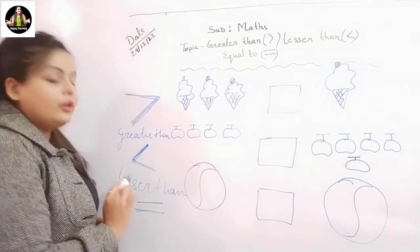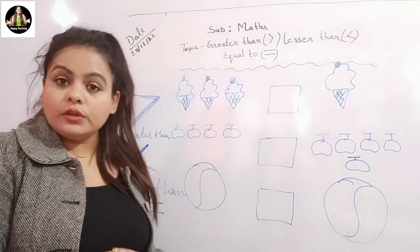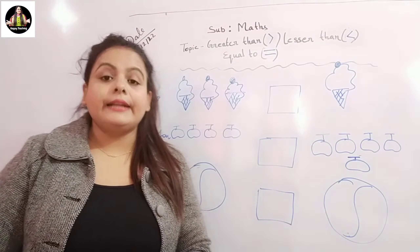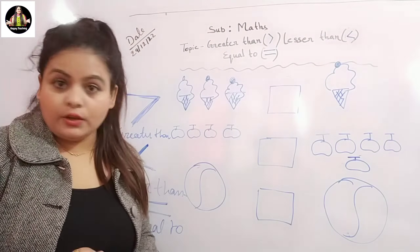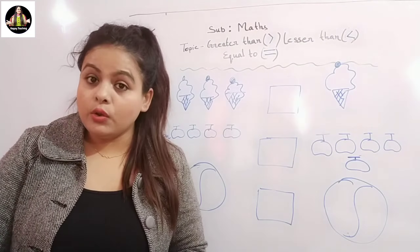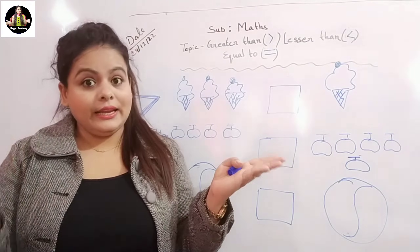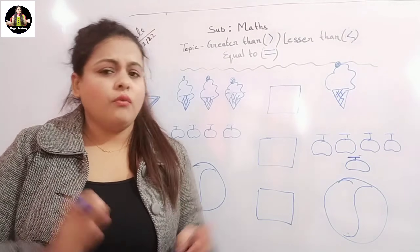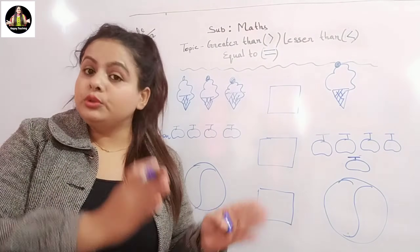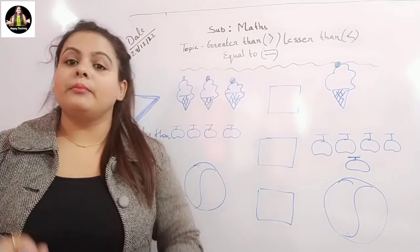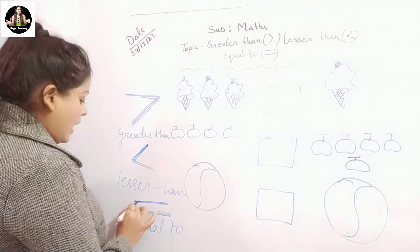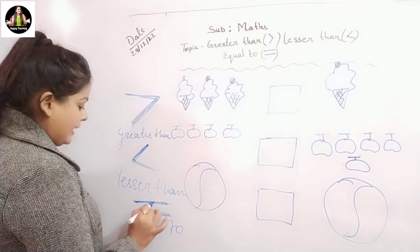This is the symbol of equal to, where the numbers on both sides are equal. When both side numbers are equal, the alligator gets confused — woh kaunsa number khaye — when both sides have the same number.